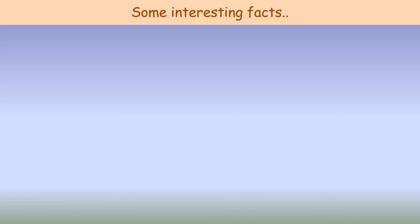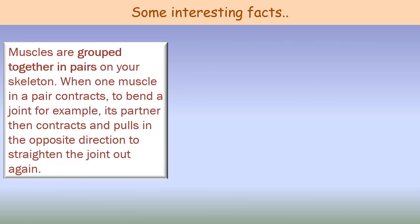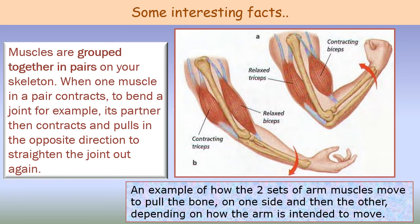As we reach the end of the lecture, let us go through some interesting facts. Skeletal muscles only pull in one direction, and they always come in pairs. Muscle cells are grouped together in pairs on your skeleton. When one muscle in a pair contracts to bend a joint, its partner then contracts and pulls in the opposite direction to straighten the joint out again. In the figure we can see two sets of arm muscles — the contracting triceps and the relaxed biceps — showing how the two sets of arm muscles move to pull the bone on one side and then the other, depending on how the arm is intended to move.